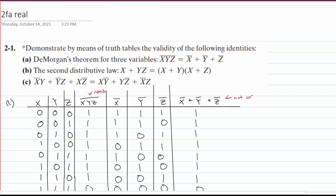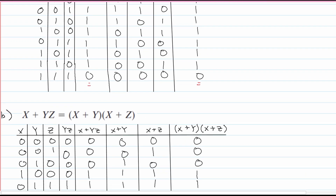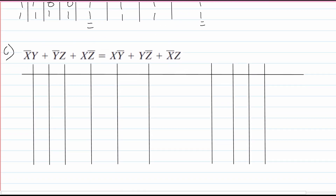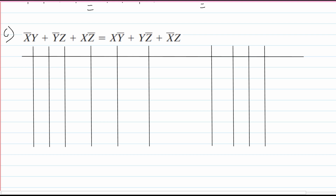In part C of this problem, we have this pretty lengthy equation right here, and we're going to demonstrate by means of truth tables the validity of the following identity. We did A and B in previous videos, and now we're looking at part C.